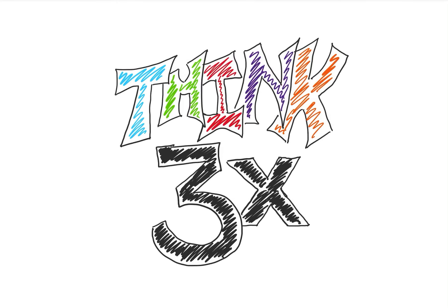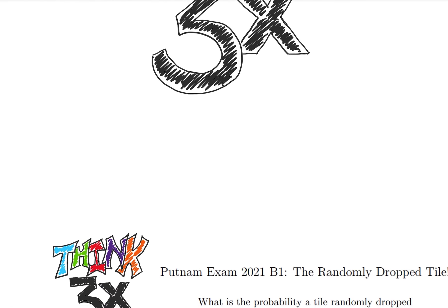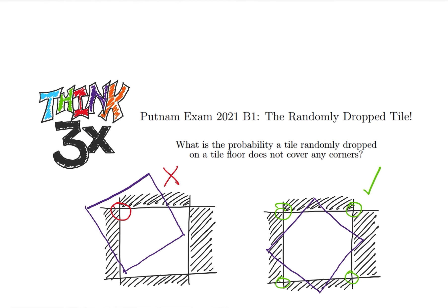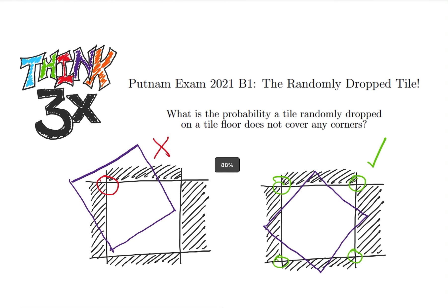Welcome back to Think Thrice Problem Solving. Today we're going to be solving another Putnam exam problem. Our problem today is problem B1 from the 2021 Putnam exam. Paraphrased, it asks: what is the probability that a tile randomly dropped on a tile floor does not cover any corners?